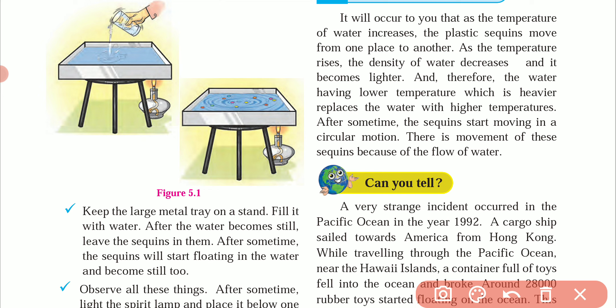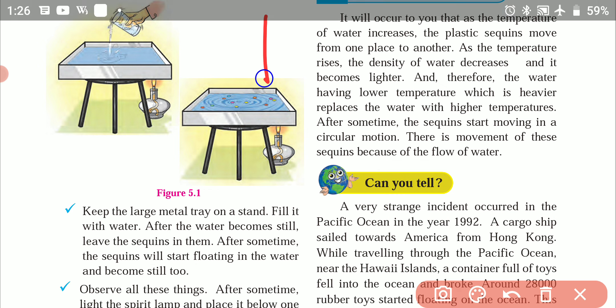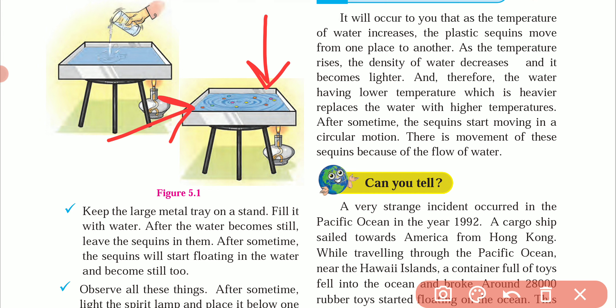What is happening here? The water is warm on one side, and the other side of the tray is cold. So there are two types of water. There is a difference in density between the hot and cold water. Hot water is less dense, and cold water is more dense. So the water starts to move, and a current forms going in one direction.